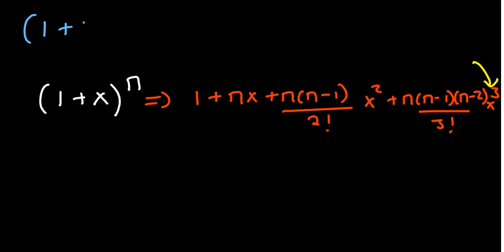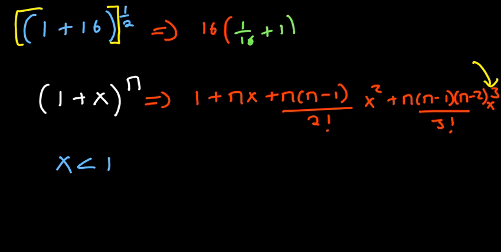Remember, I did mention this formula applies when the value of x is less than 1. So we can add new brackets so we can factorize the inner part. If you factorize 16 from the inside, you get (1+1/16)^(1/2). We can distribute the half to what is inside, so 16 to the power 1/2 is the square root of 16, which is 4.